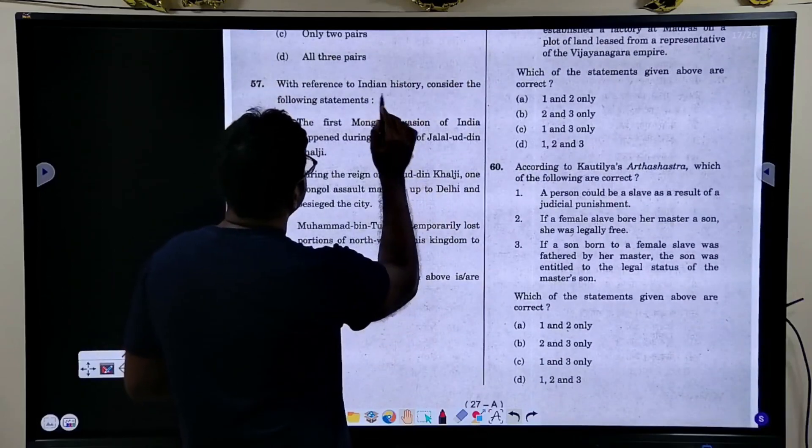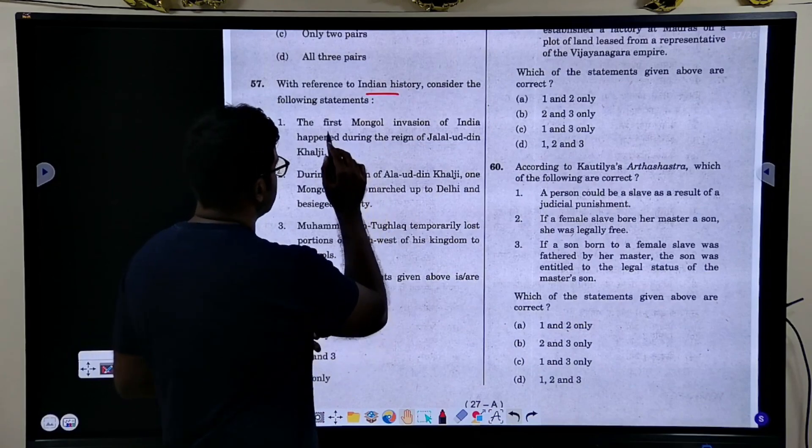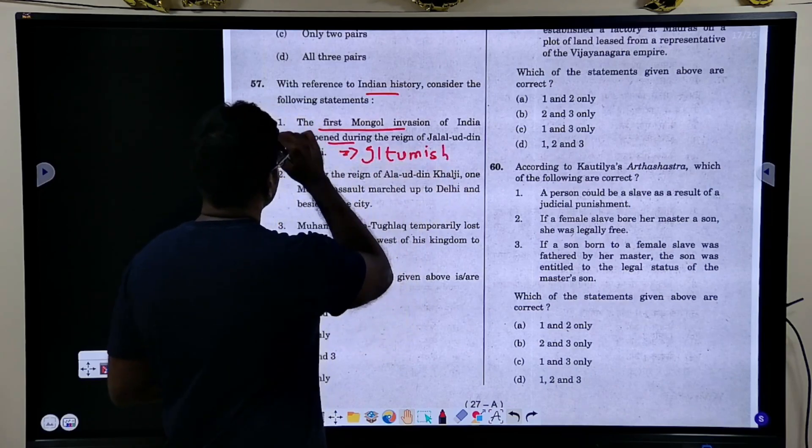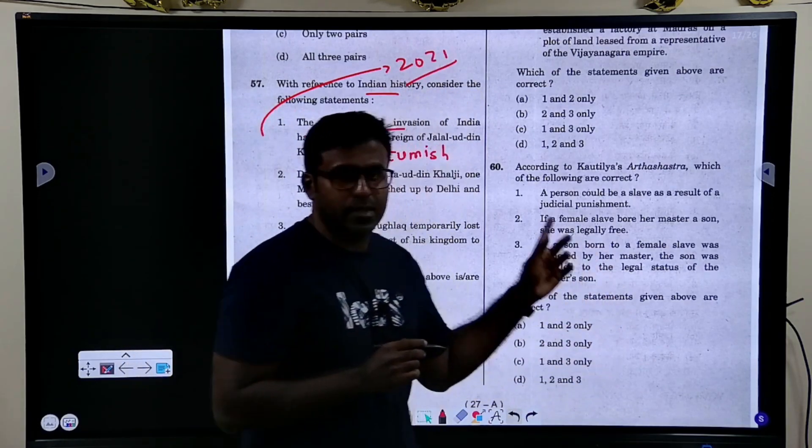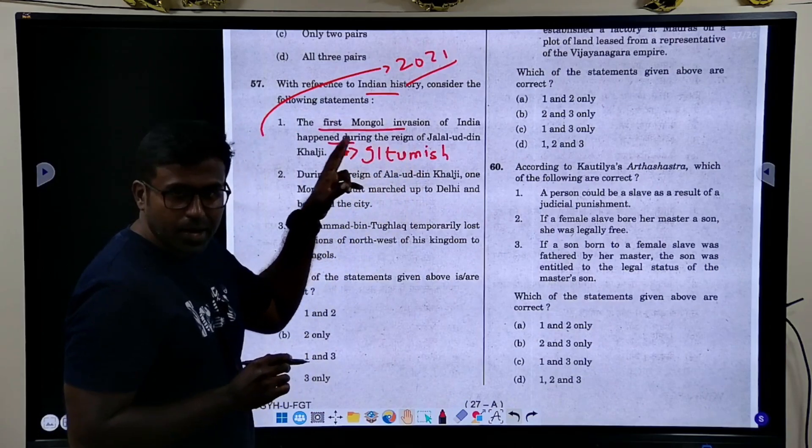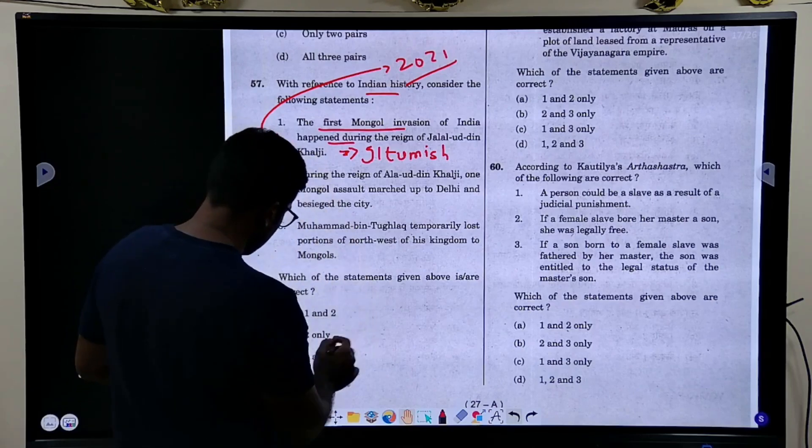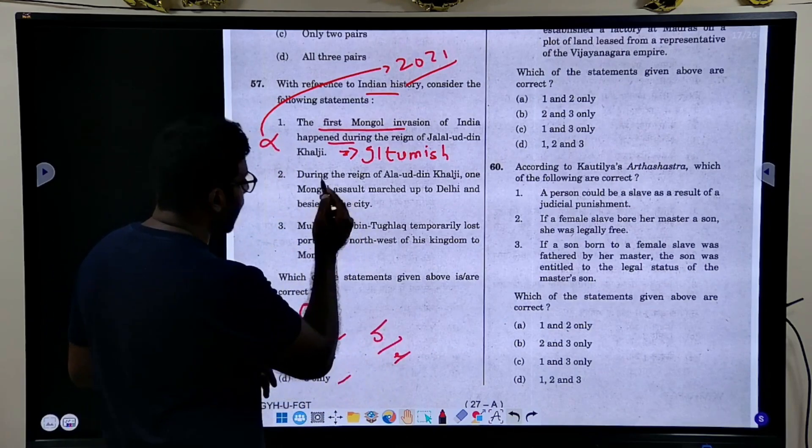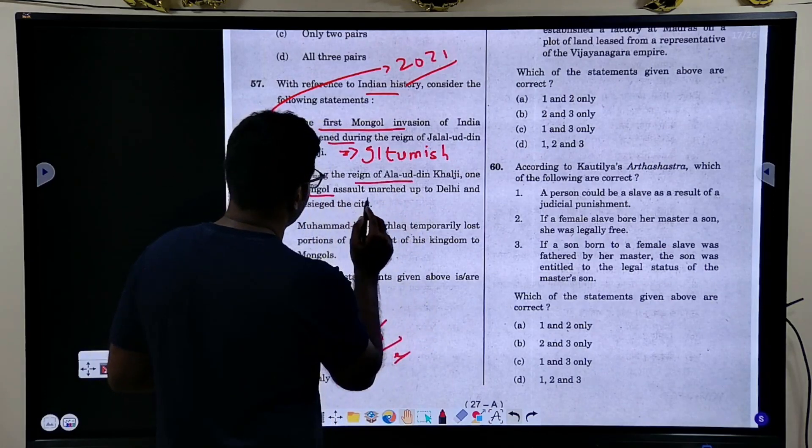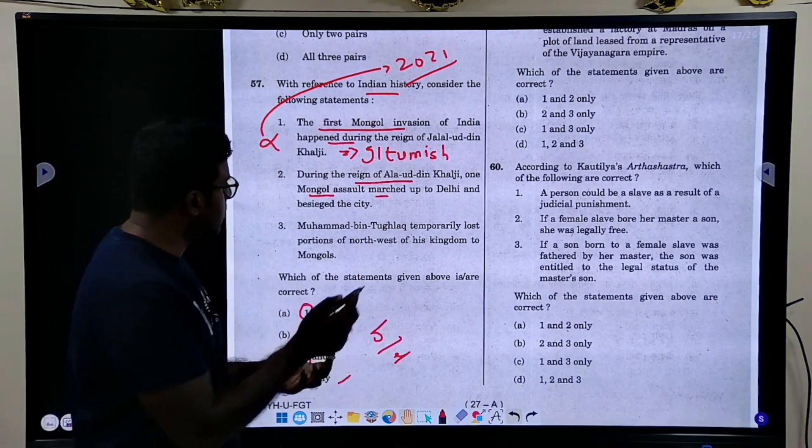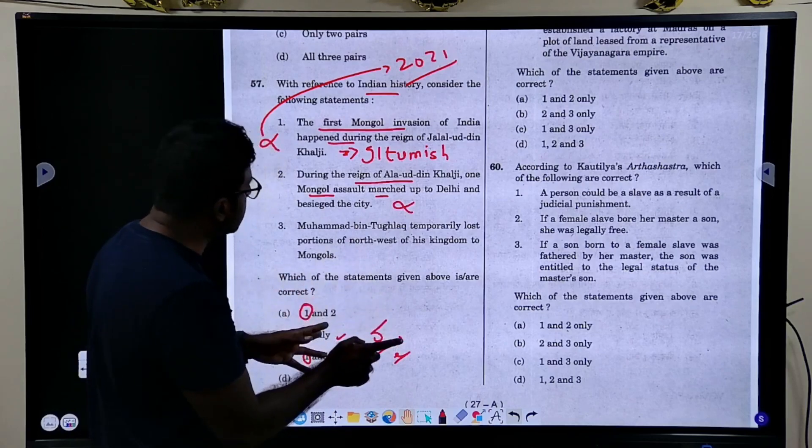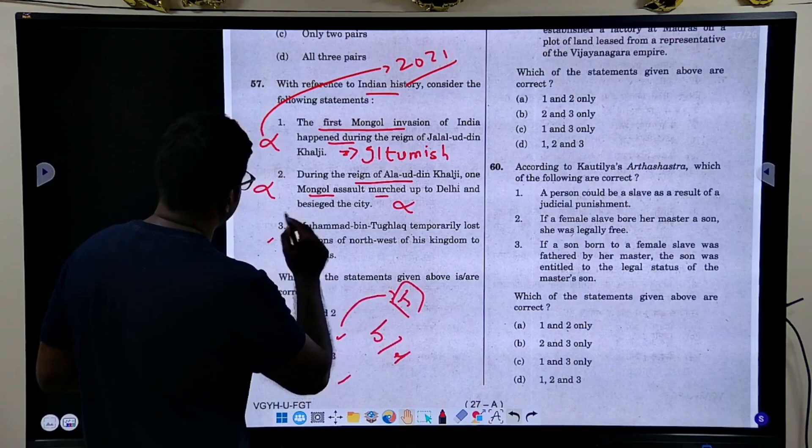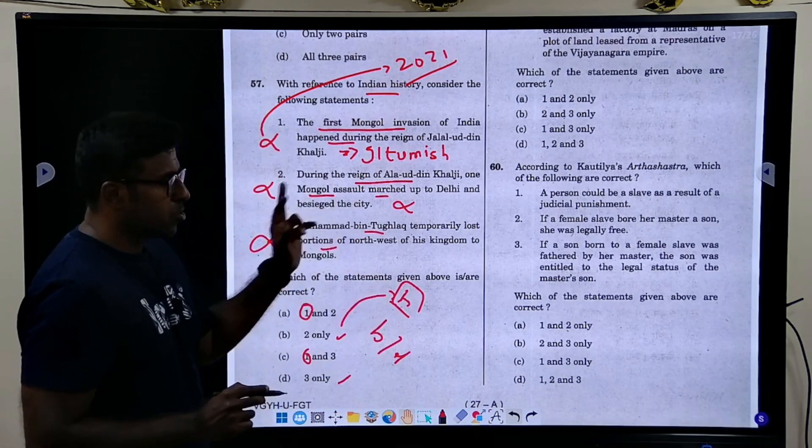With reference to Indian history, this is why previous year question paper I keep insisting. First Mughal invasion, you will find this question. Last time this was one of the question. 2021 question paper, take 2021 question paper, you will find this question. Something related to Mongol invasion and Iltutmish is there. So this is not right. So remove this, one is removed, either 2 or 3. So B or D. I thought during the reign of Alauddin Khilji, Mongol assault - I thought Alauddin Khilji was very strong and hence this assault in Delhi could not have happened. But I think this is the right thing, B is the answer.